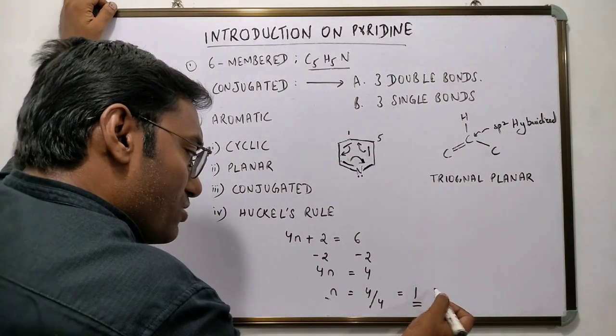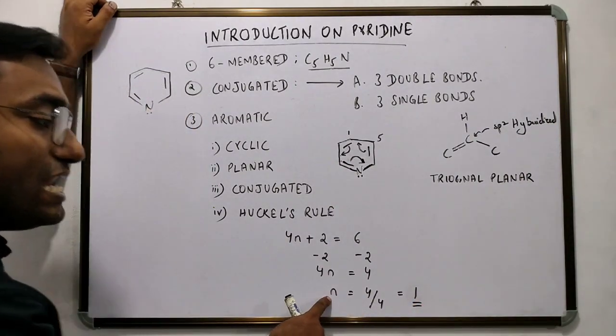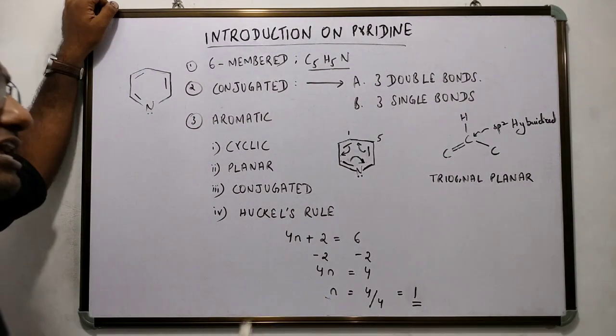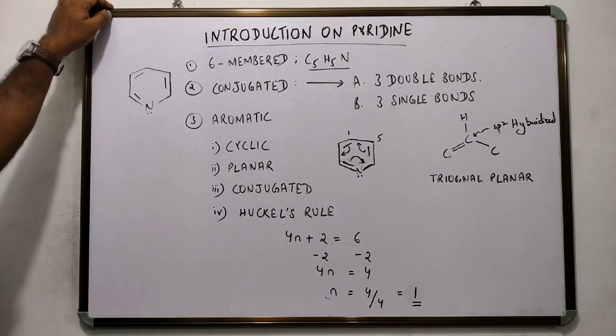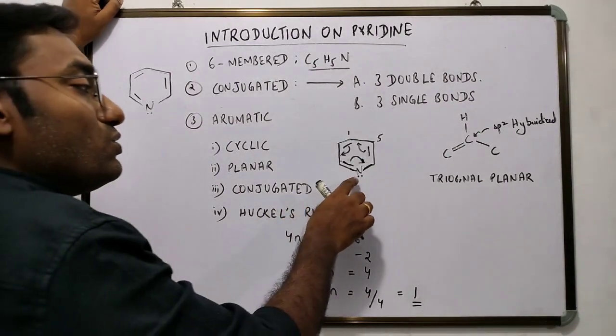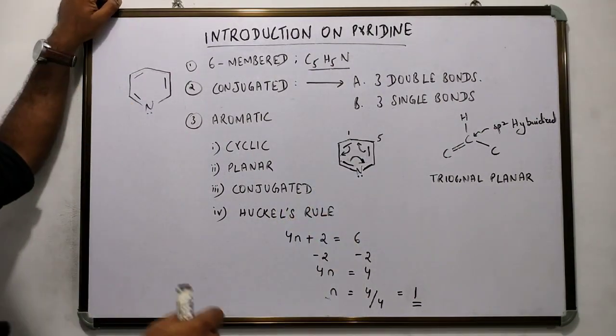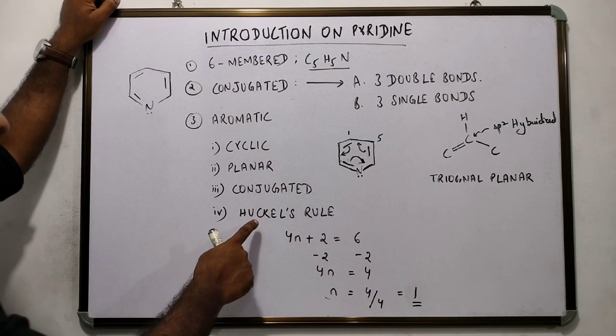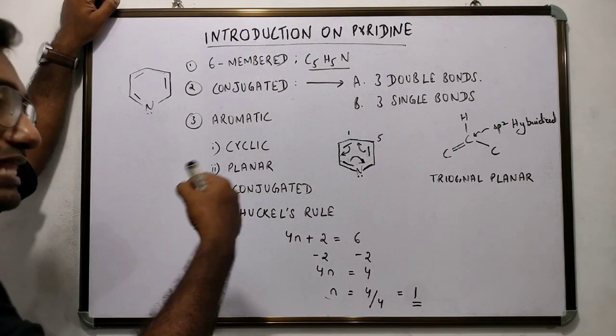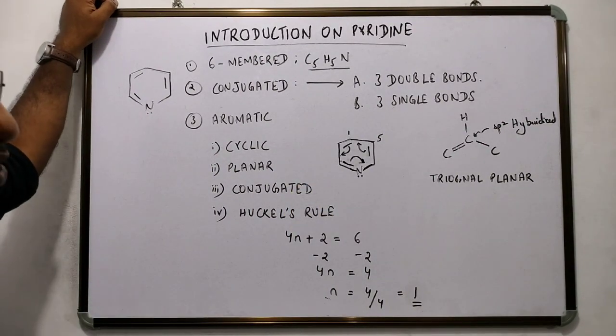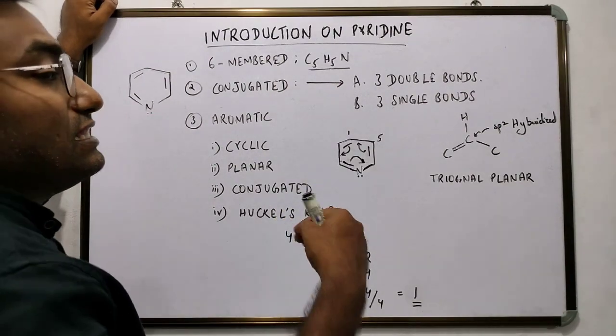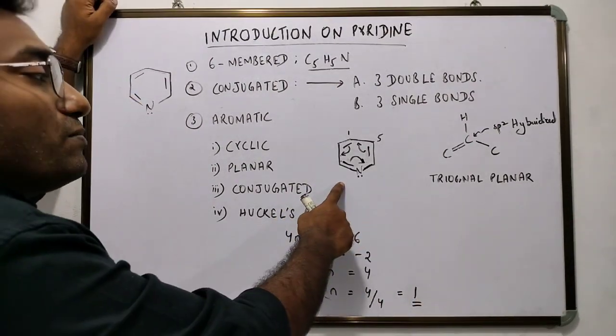1 is not important. What is important is n is not a fraction but a whole number. If you get n as a whole number, that would mean that the molecule under consideration is compliant with Huckel's rule, that is, delocalization occurs in the molecule, and that is, the molecule is aromatic. That means pyridine here has been proved as aromatic.